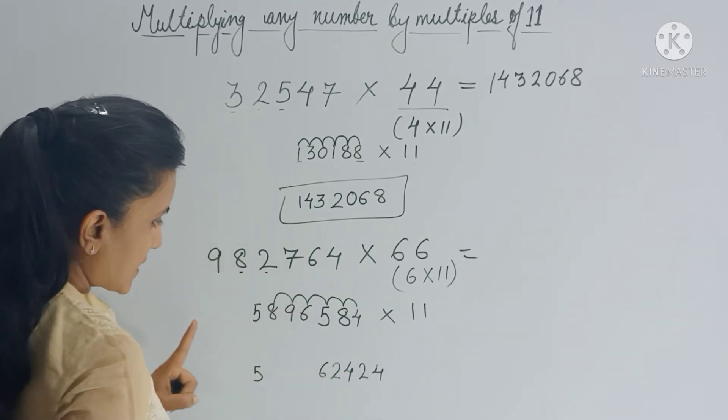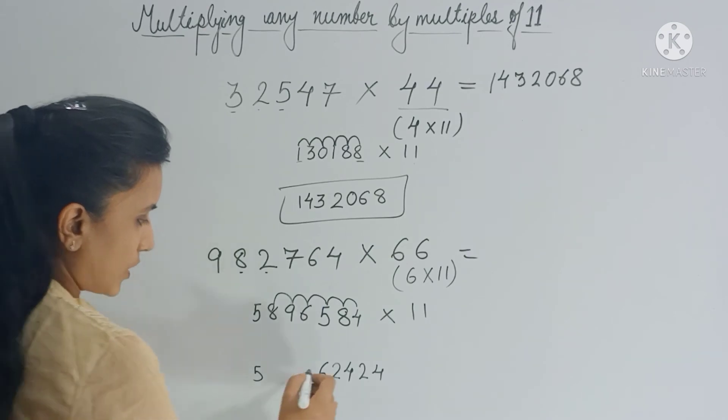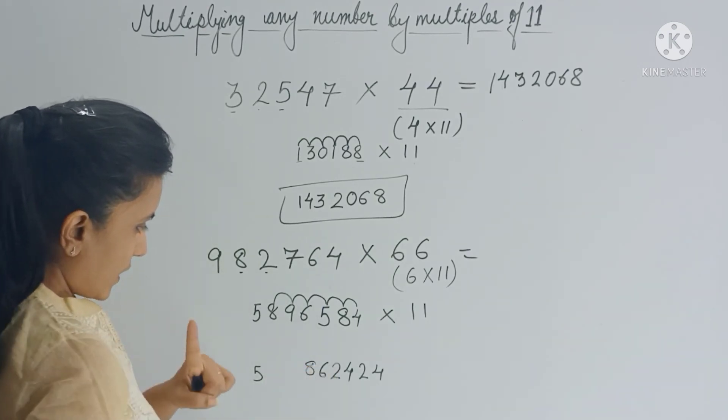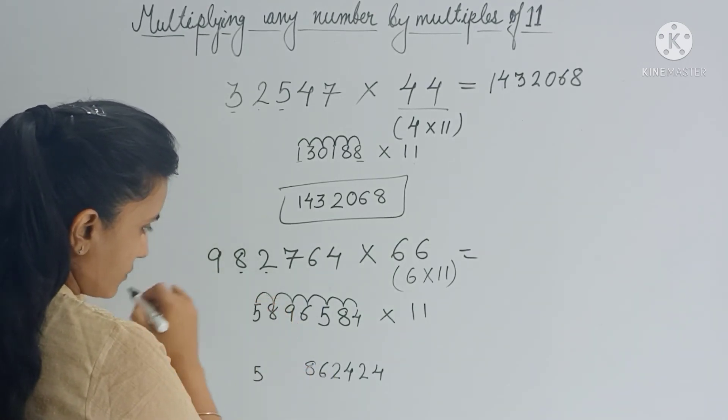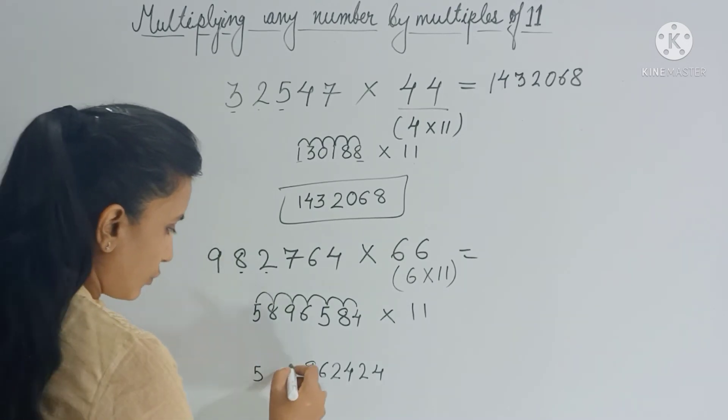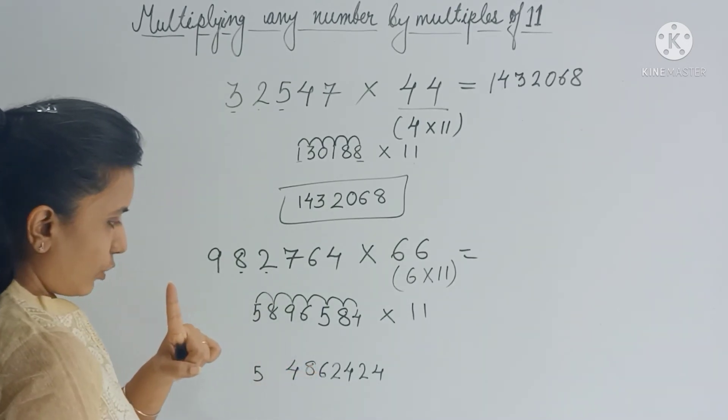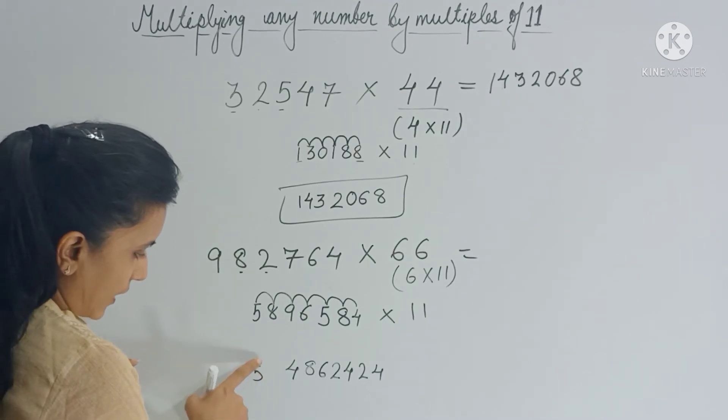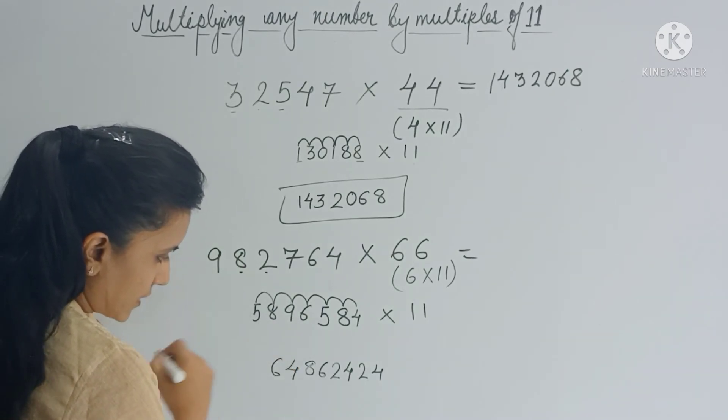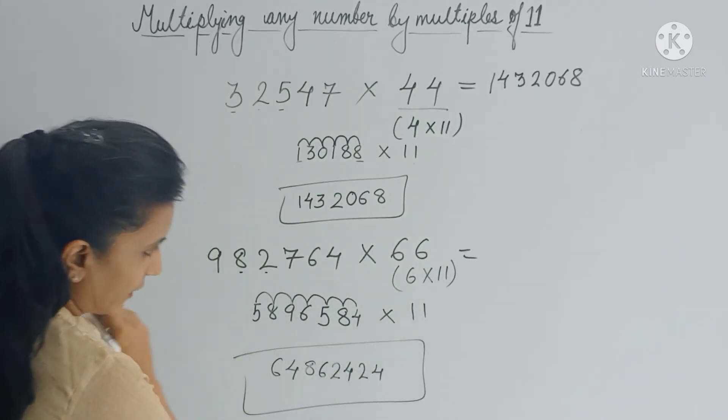Now 9 plus 8 is 17, 17 plus 1 is 18, so 1 is carry forward. And 8 plus 5 is 13, 13 plus 1 is 14. Now 1 is carry forward. That 1 goes here and this 5 becomes 6. So this is your final answer.